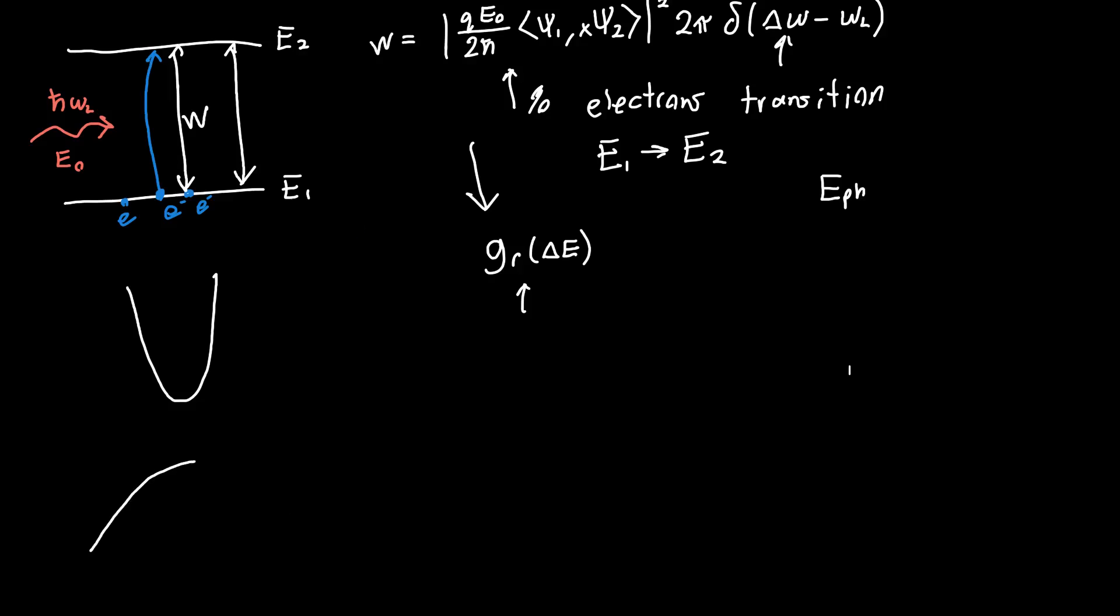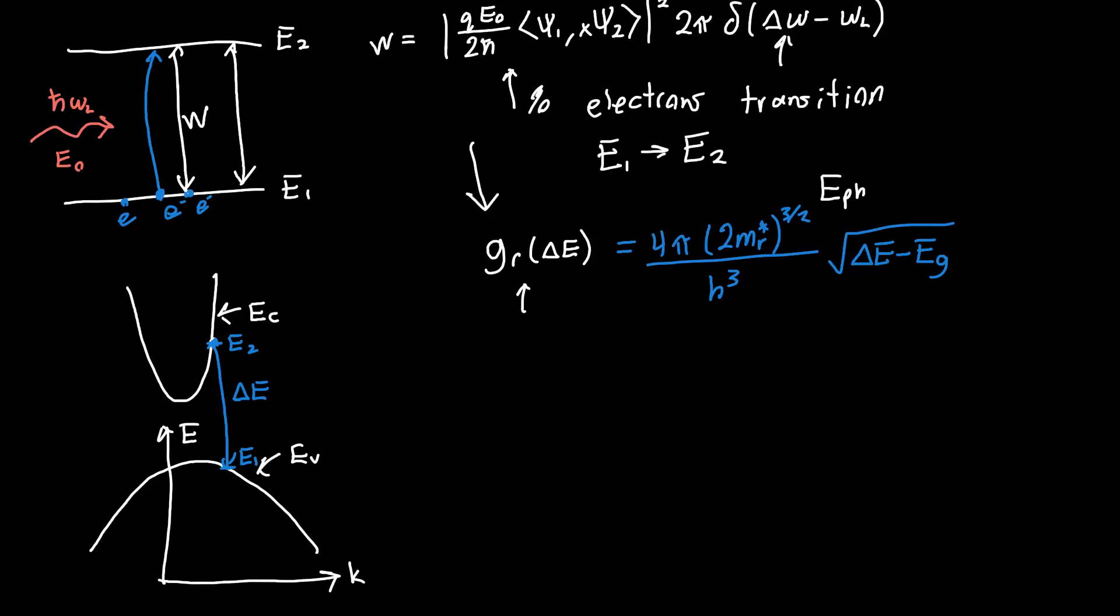Let me draw that a little more symmetrically. So we've got some conduction band and some valence band. And this is the momentum axis. This is the energy axis. And we can consider states sort of one at a time. So let's call this energy level E2 and this energy level E1. And this is delta E. And we calculated an equation for the reduced density of states. And I'm just going to reprint that here for completeness. It was just 4 pi times 2 times the reduced mass to the 3 halves over H cubed times our energy separation delta E minus our band gap energy.